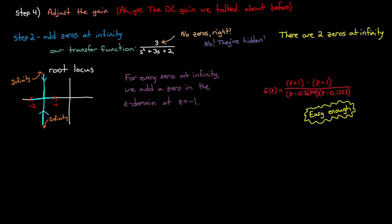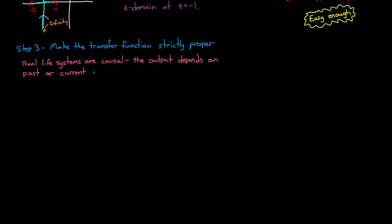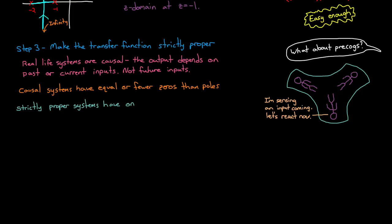Now while mathematically we can have a transfer function that can have any number of poles and zeros, real life systems can't because real systems are causal. Causal means that the output depends only on the past or current inputs, but not future inputs. Clearly in real life you can't respond to something that hasn't happened yet. Now a causal transfer function is one that has an equal number or fewer zeros than poles. Our system has an equal number, but the convention for the matched pole-zero method is to just make it strictly proper, or a transfer function that only has fewer zeros than poles.